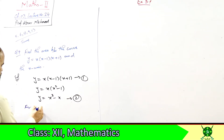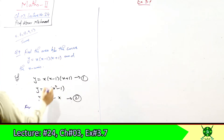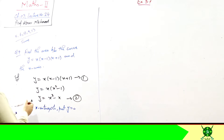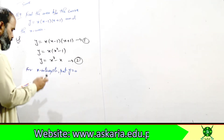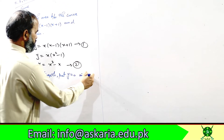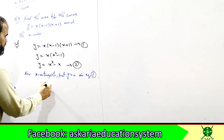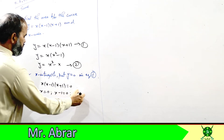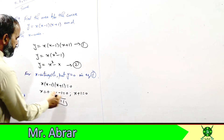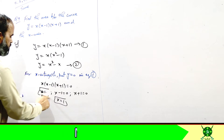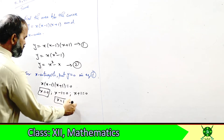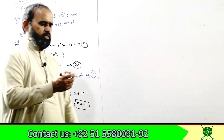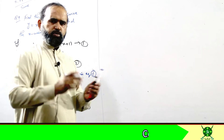First, as we did in question 7, we find the x-intercepts. Since the curve touches the x-axis, for x-intercepts, put y = 0. Using equation 1 (the factor form), we get x(x−1)(x+1) = 0, giving x = 0, x−1 = 0 so x = 1, and x+1 = 0 so x = −1.